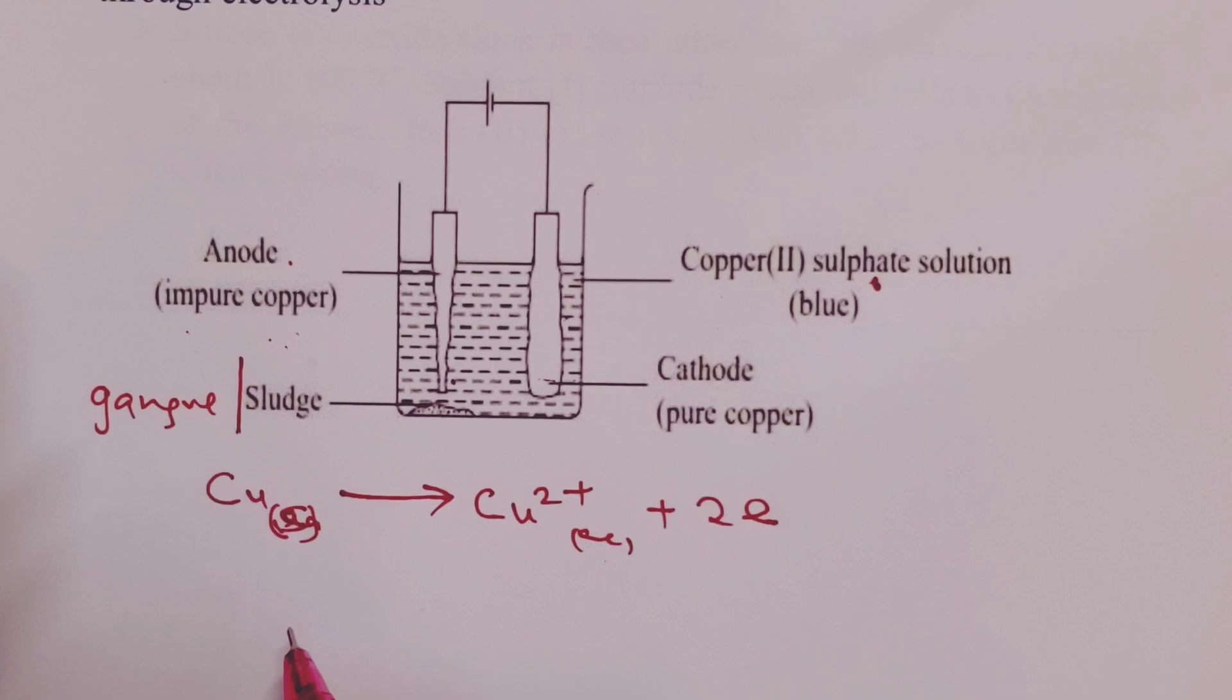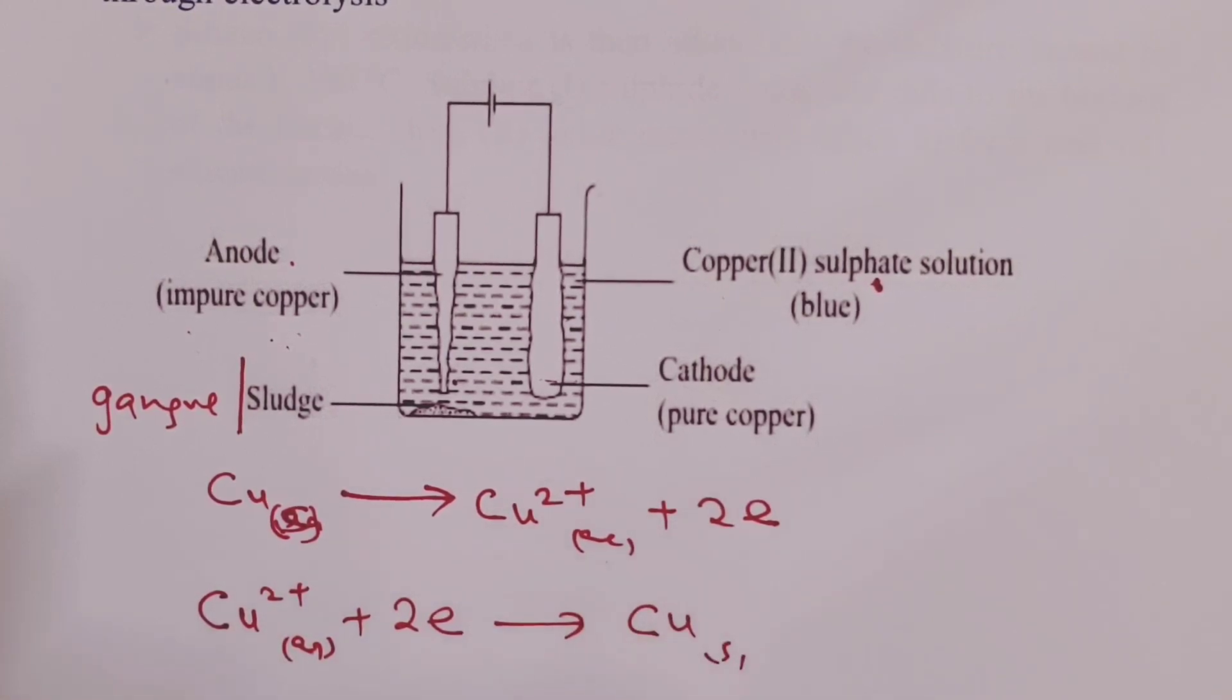The equation at cathode, therefore, would be reduction of copper ions through gain of 2 moles of electrons to form pure copper metal. That is how we do the refining.